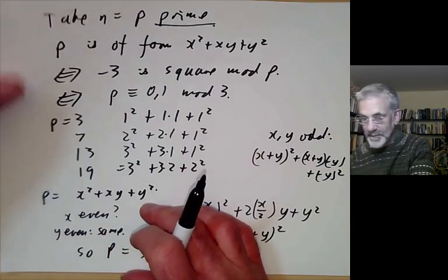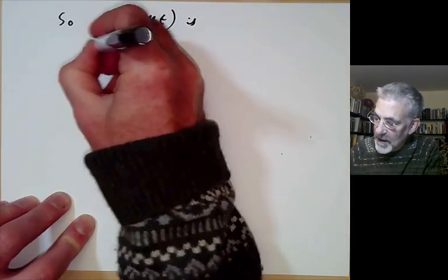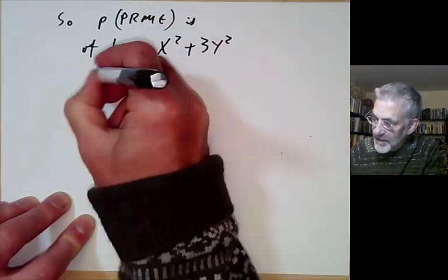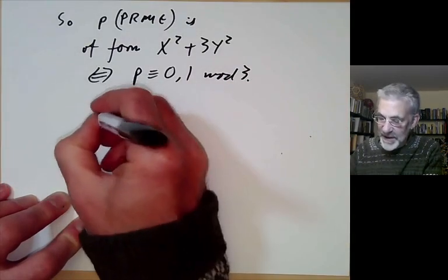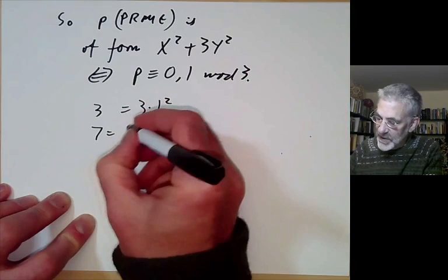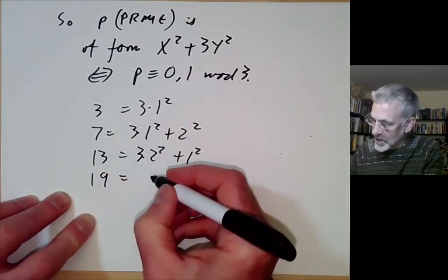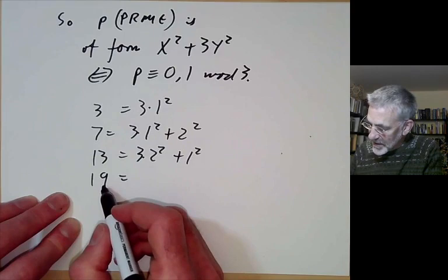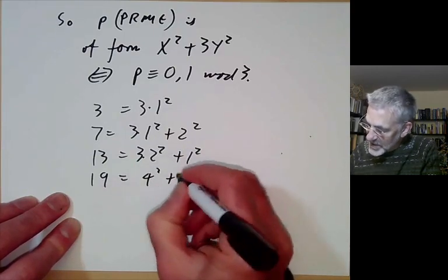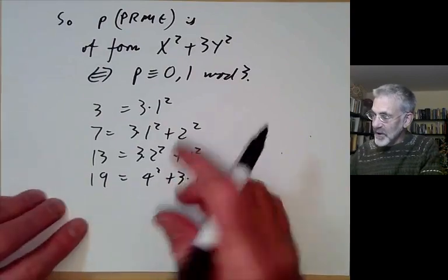So we have the theorem: a prime p is of the form x² + 3y² if and only if p ≡ 0 or 1 mod 3. We can check: 3 = 3·1², 7 = 3·1² + 2², 13 = 3·2² + 1², and 19 = 4² + 3·1². That completes the case d = −3, telling us exactly which primes can be written as a square plus 3 times another square.